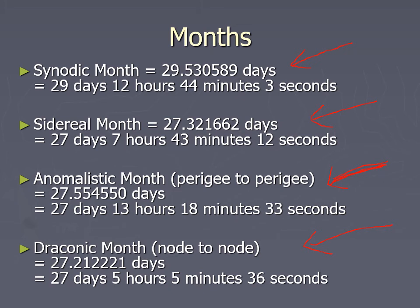In fact, what happens is you have to go about six and a half months until the cycle gets back in sync enough to get another eclipse. So that means it's really two times out of the year that you might get eclipses, and they're about six and a half months apart. We call those eclipse seasons.